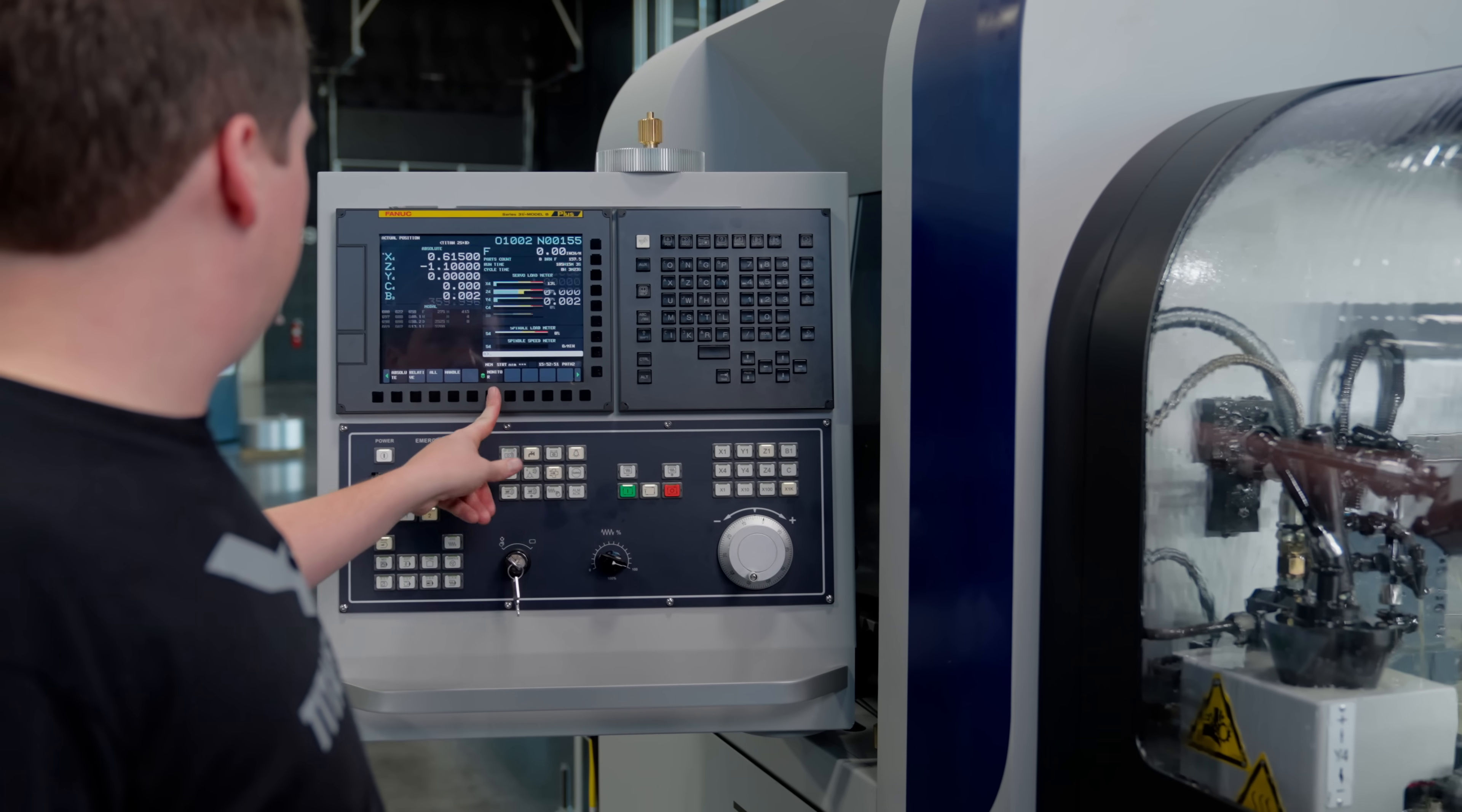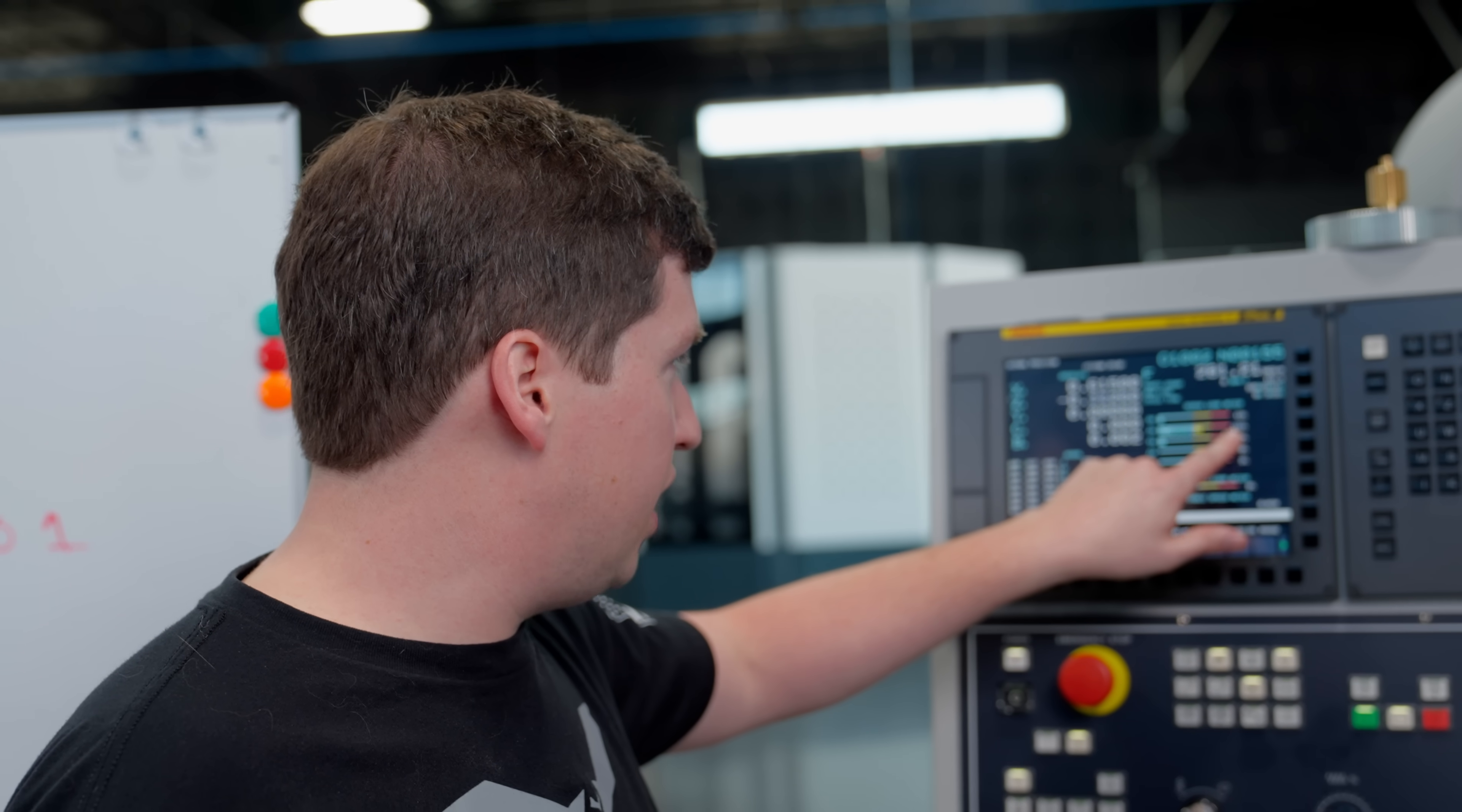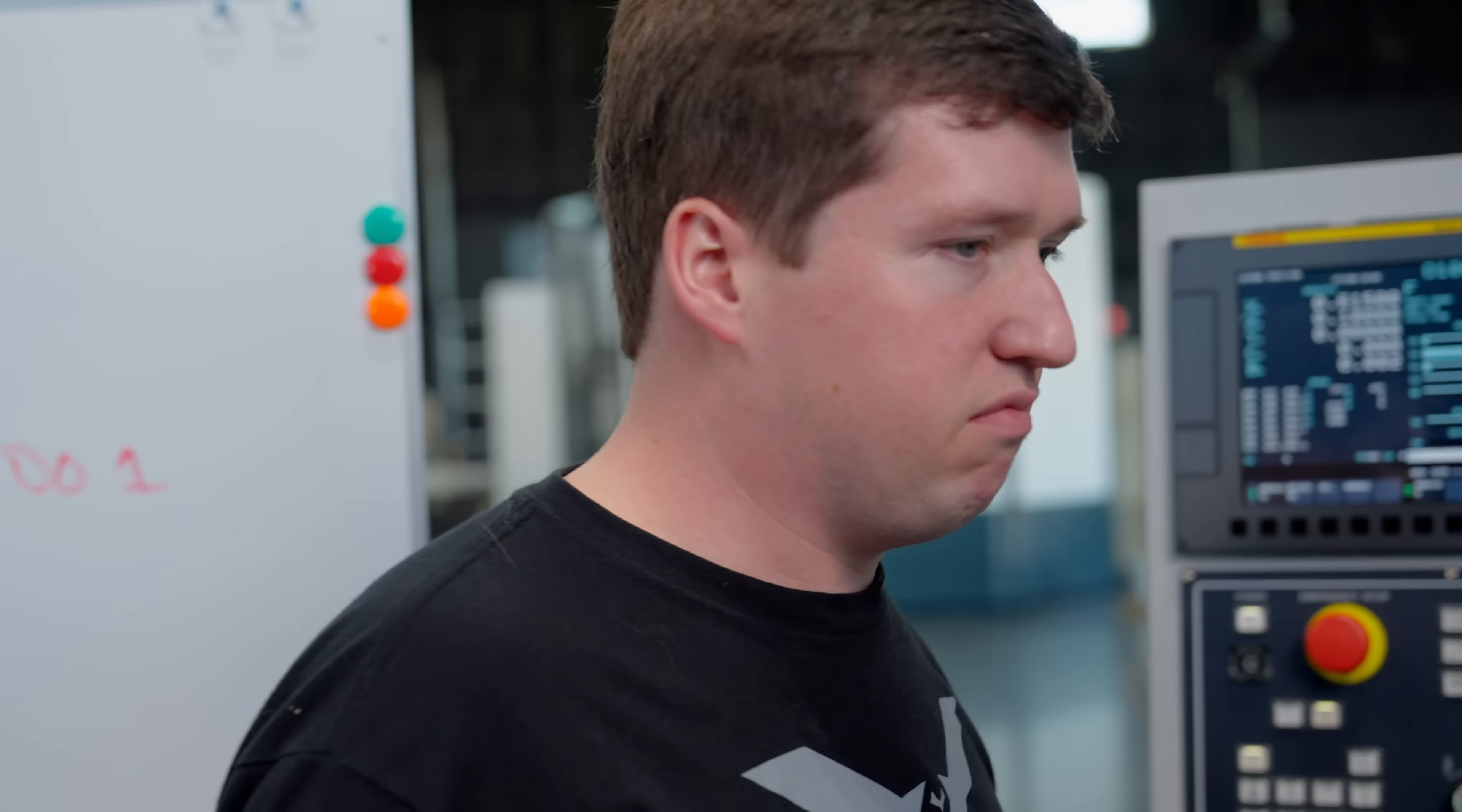We can go over to monitor, take a look at our Z-axis load. The high jump is going to be the retract when the machine rapids, it uses a lot of force. But the feed looks like it's at like 25 percent. It doesn't even look like it's phasing it. It's just going right through that.